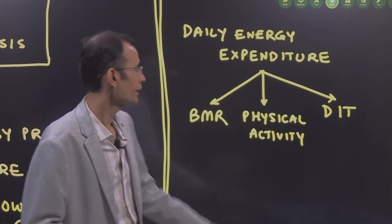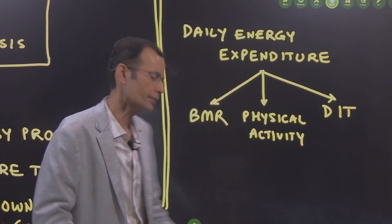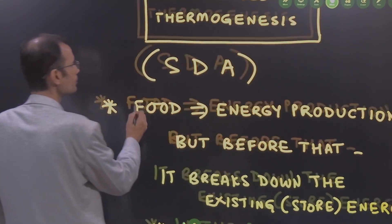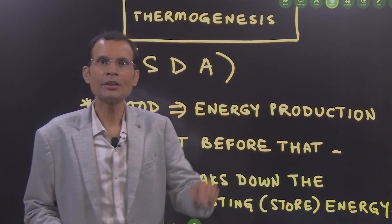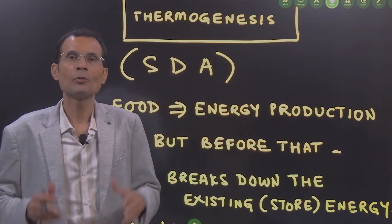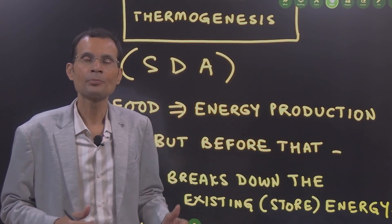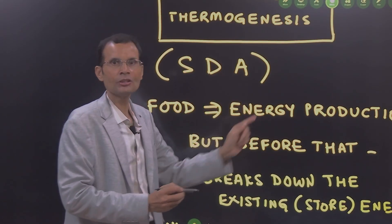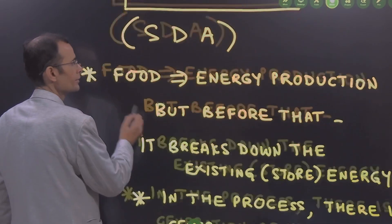And the third one is diet-induced thermogenesis. So let's have a look at it carefully and in detail. The name itself tells you diet-induced thermogenesis. That is, whenever we eat the diet, there is heat generation in the body. That is thermogenesis. Also called as specific dynamic action of the foodstuffs.